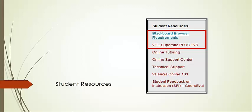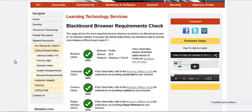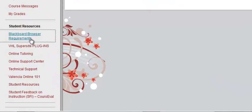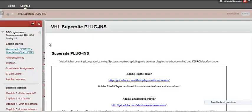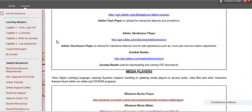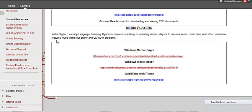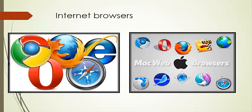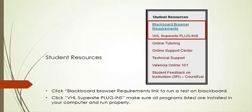The last section is Student Resources. You do not need to access this section regularly, but I do recommend that you select the first link and run the browser requirement scan, and select the second link, VHL Supersite Plugins, and verify that you have all the programs listed installed in your computer and ready to run. For an easier experience using Blackboard, use Mozilla Firefox instead of Internet Explorer. You can use any browser you like, just make sure that you run the Blackboard and the VHL plugins first.